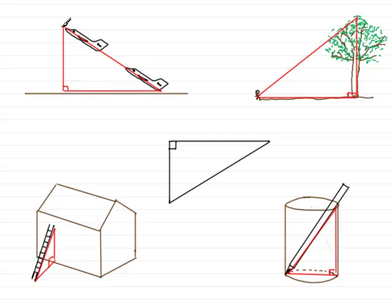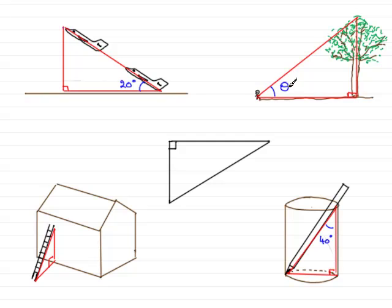Like for instance, suppose we have this triangle — it could be the angle that the aircraft takes off at. Let's suppose it takes off at 20 degrees. Or it could be, in the case of our pencil in the cylinder, the angle that the pencil makes with this side of the cylinder — let's suppose it makes an angle of 40 degrees. Sometimes we might just want to work out an angle in a triangle, so we might want to work out this angle here, which I'll give as the symbol theta.